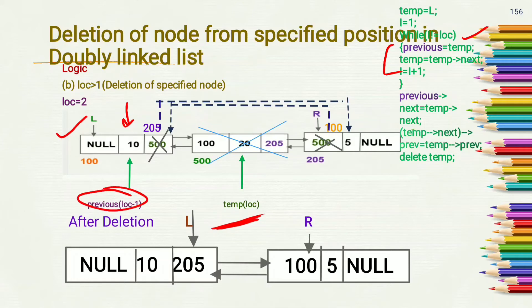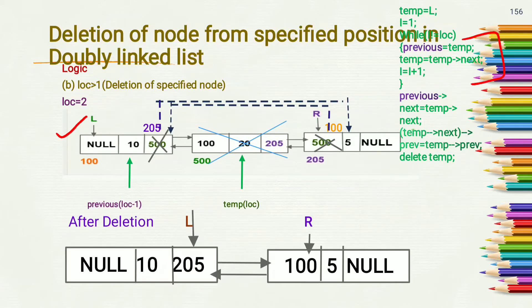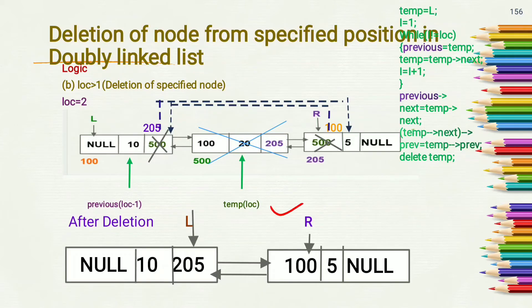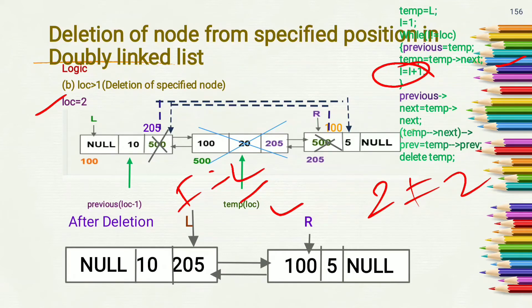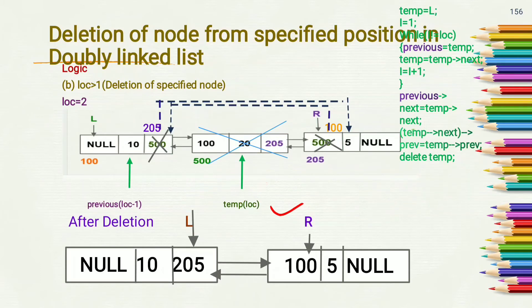Inside the loop: previous = temp, temp = temp→next, and i = i + 1. This moves temp to the location-numbered node and previous to location minus 1 node. For location = 2: when i becomes 2, the condition i ≠ location is false, so the loop exits. Finally, temp is pointing to the second node and previous is pointing to the first node.